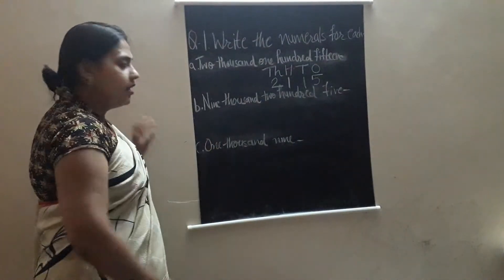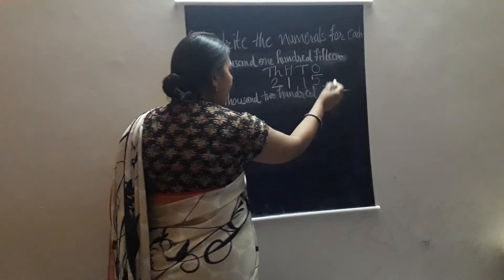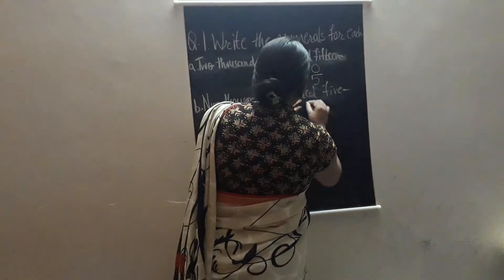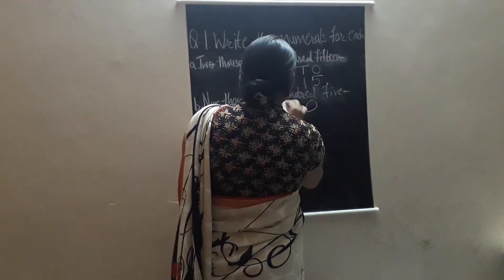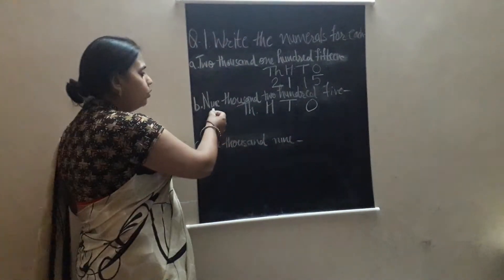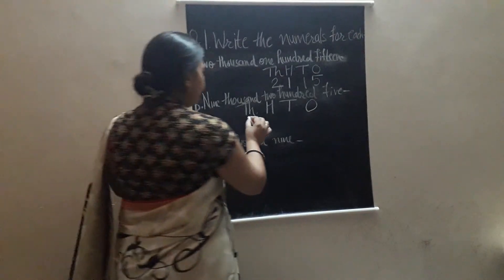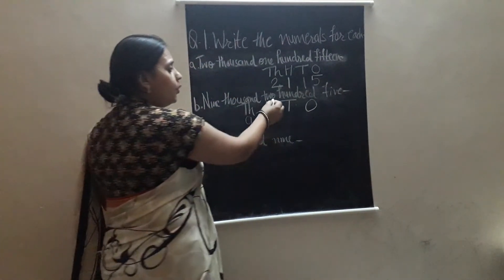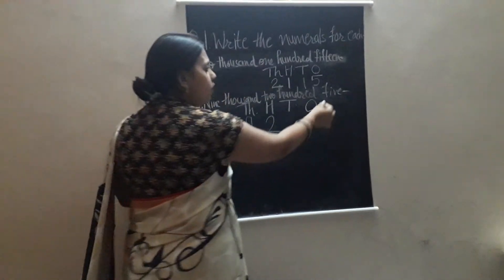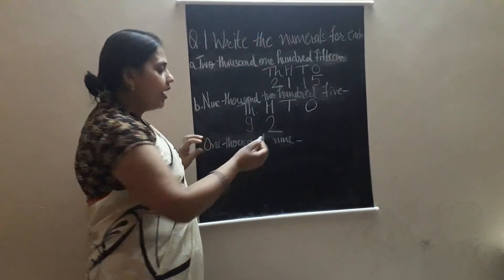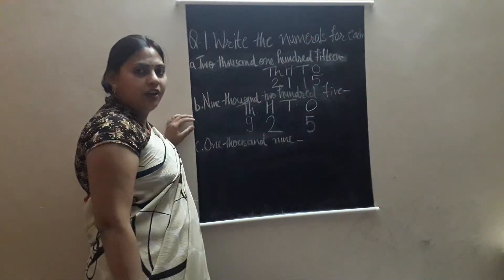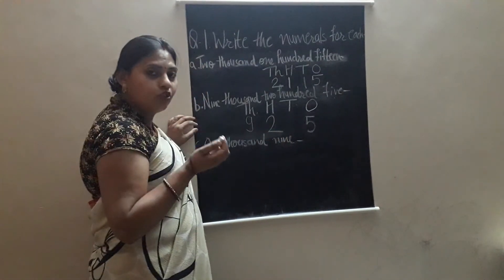Part B is 9,205. We again use place value: ones, tens, hundreds, and thousands. Our question is 9,000, so we put nine at the thousands place. Two hundred — we put two at the hundreds place. Now five — five is a single digit, so we put five at the ones place. We have nothing at the tens place, so we put zero there.